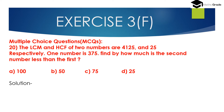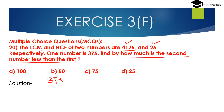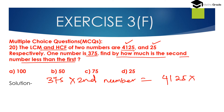Question number 20, MCQ: The LCM and HCF of two numbers are 4125 and 25 respectively. One number is 375. Find by how much the second number is less than the first. We need to find the second number using the formula: first number × second number = HCF × LCM.